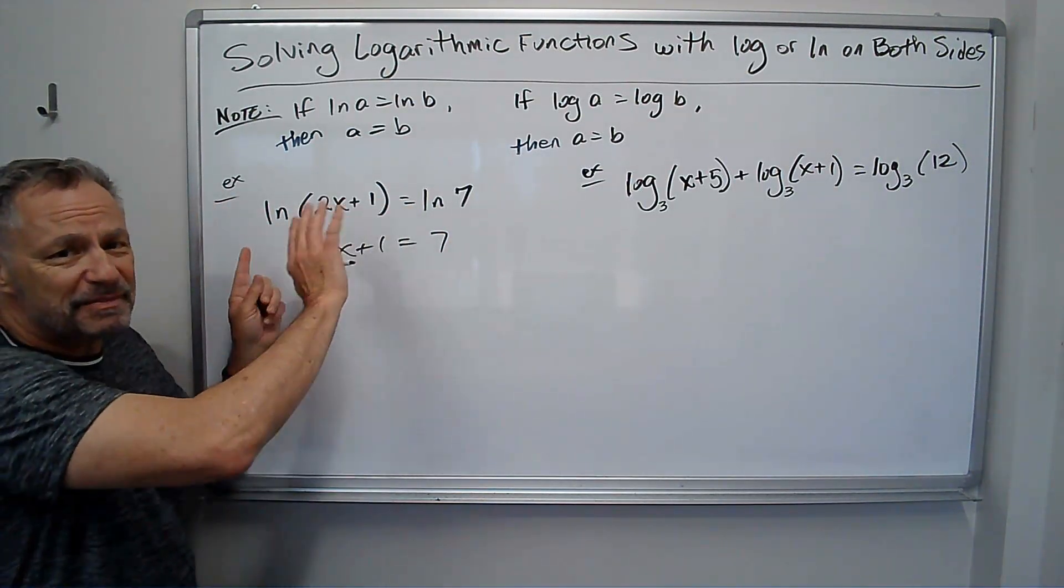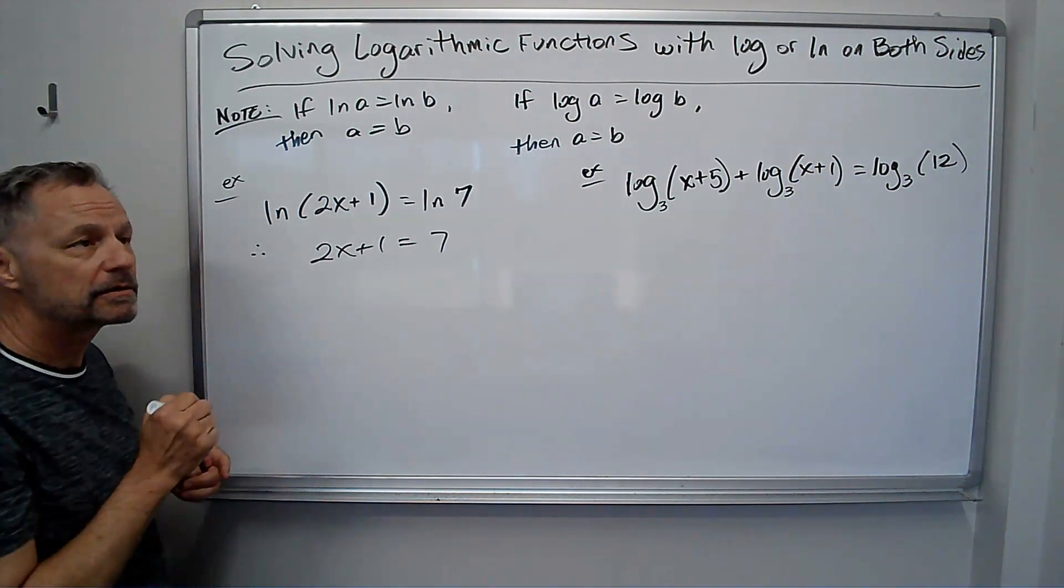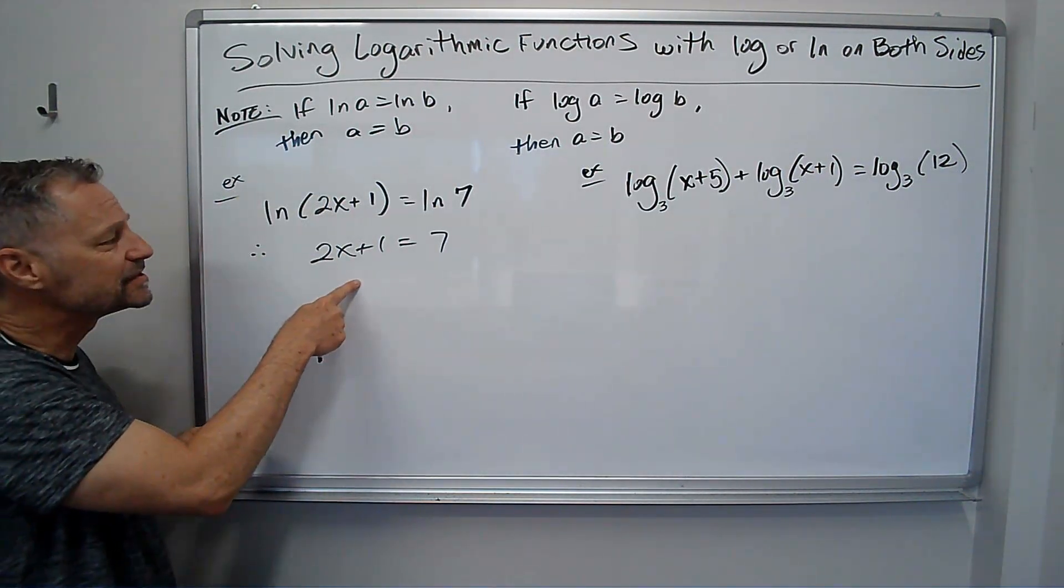Don't write a step like divided by ln, that's not what we're doing when you're using this property. We can say, therefore, from that property, this is the case. And then just solve.